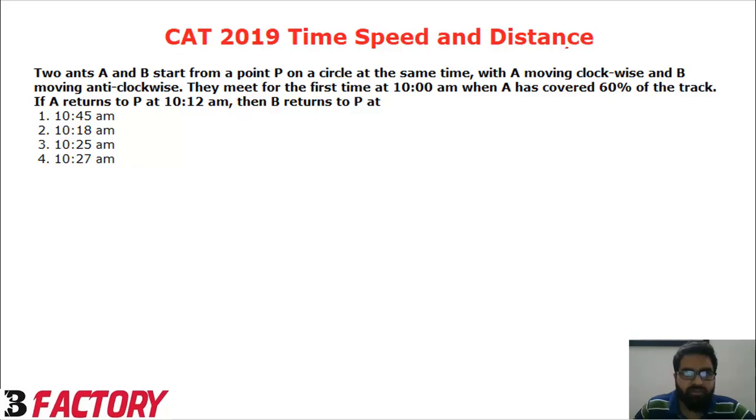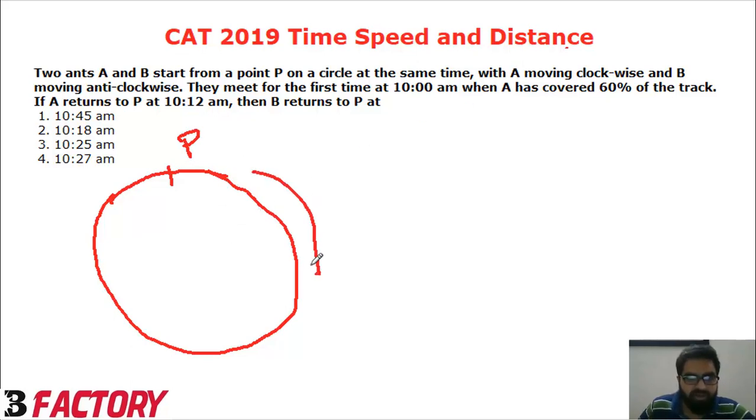In this example, we are given that there are two ants starting from point P on a circular track at the same time. A is moving in the clockwise direction and B is moving in anticlockwise direction.